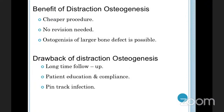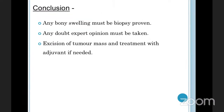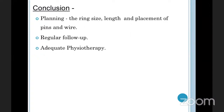My take-home message: there is benefit of distraction osteogenesis — it is cheaper, no revision needed, osteogenesis of larger bone defects is possible. The drawback is it requires long-term follow-up and patient compliance. For tumors: any bone swelling must be biopsy proven, involve a senior or expert opinion if in doubt, excision with adjuvant therapy if needed. For Ilizarov, always plan ring size as per length and placement of wires and pins, handle post-operative tissue carefully, and ensure regular follow-up and adequate physiotherapy.